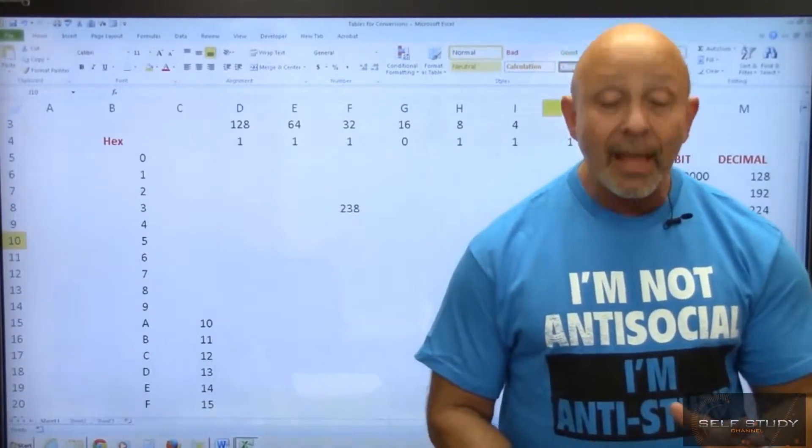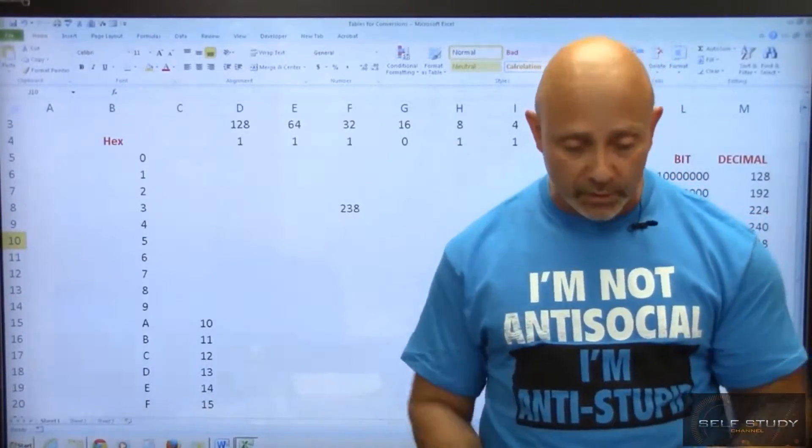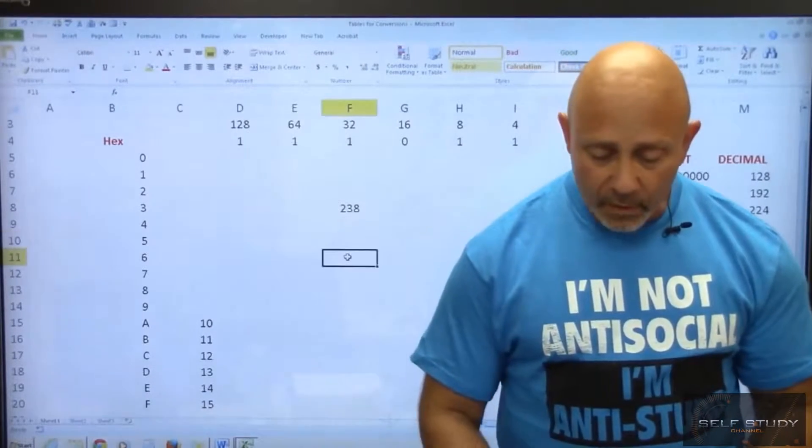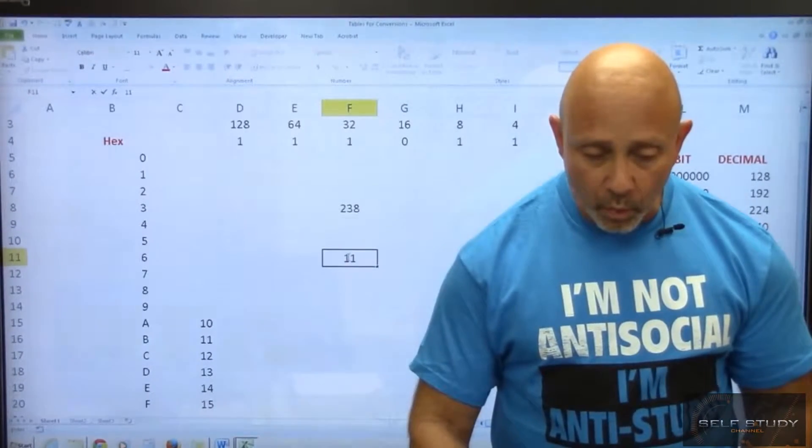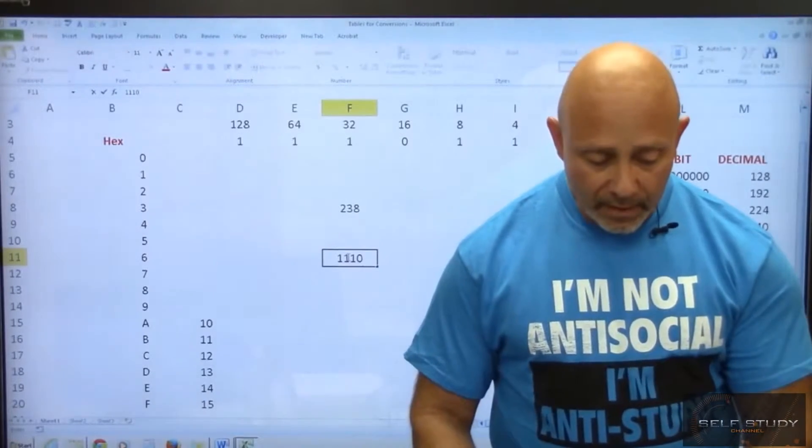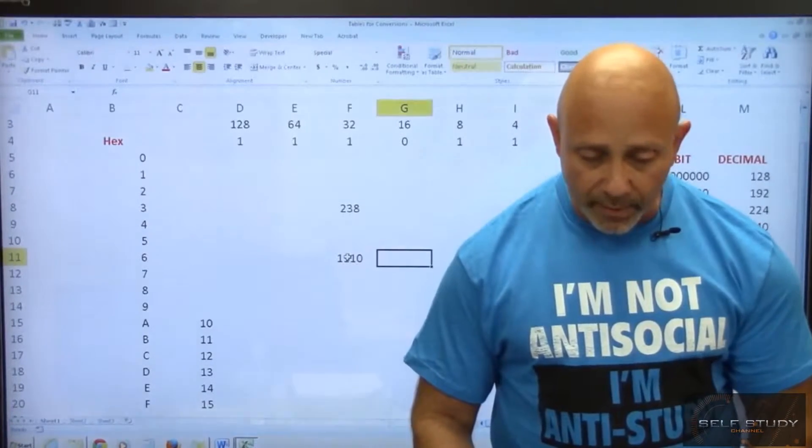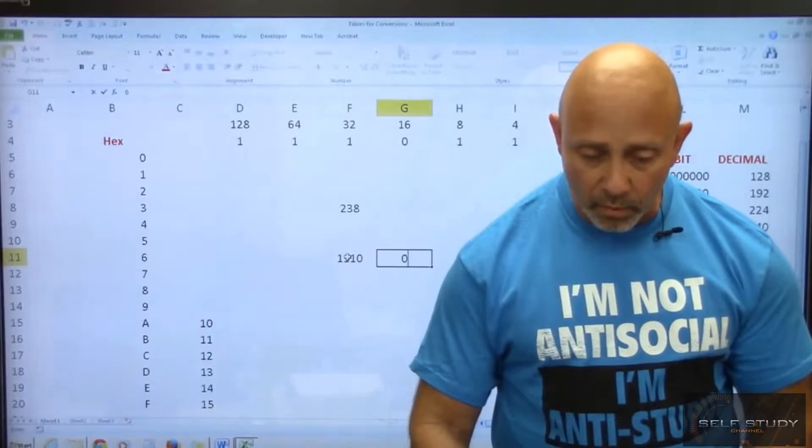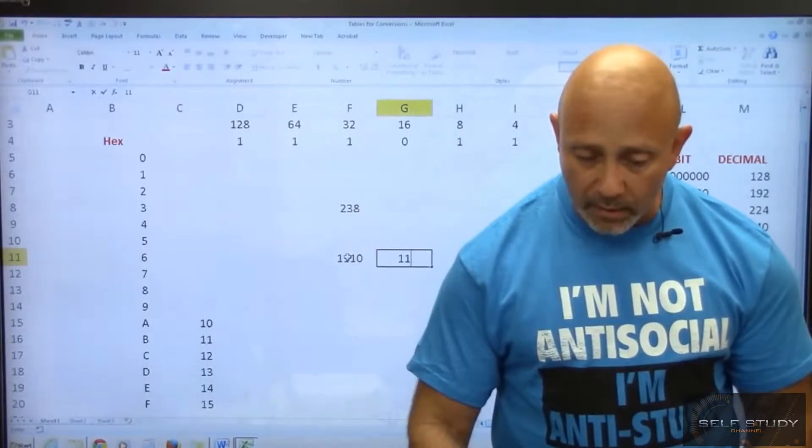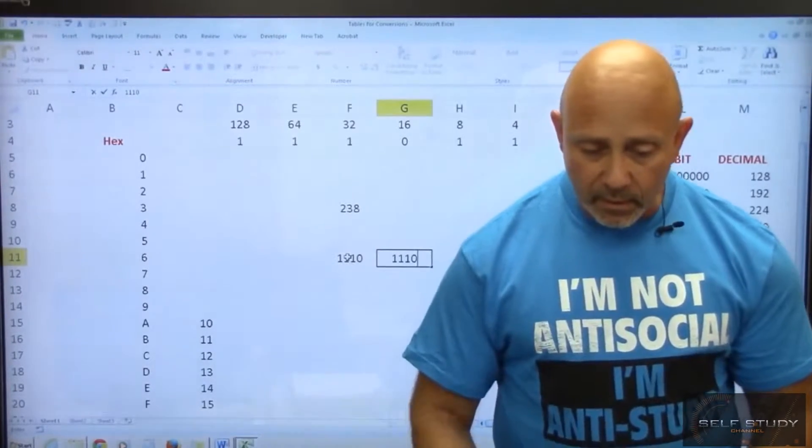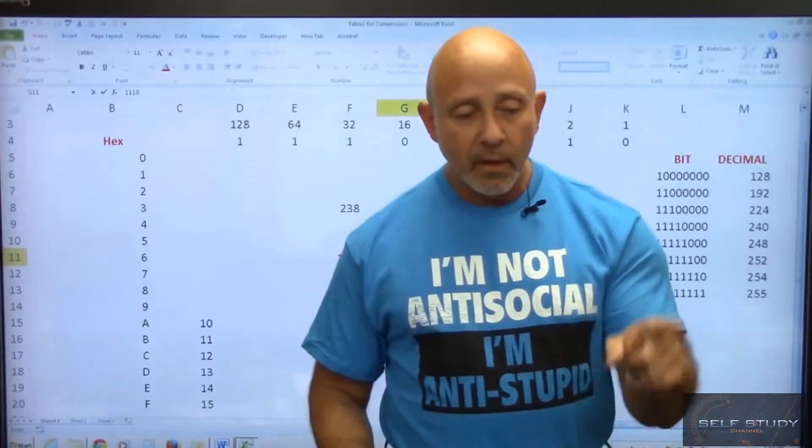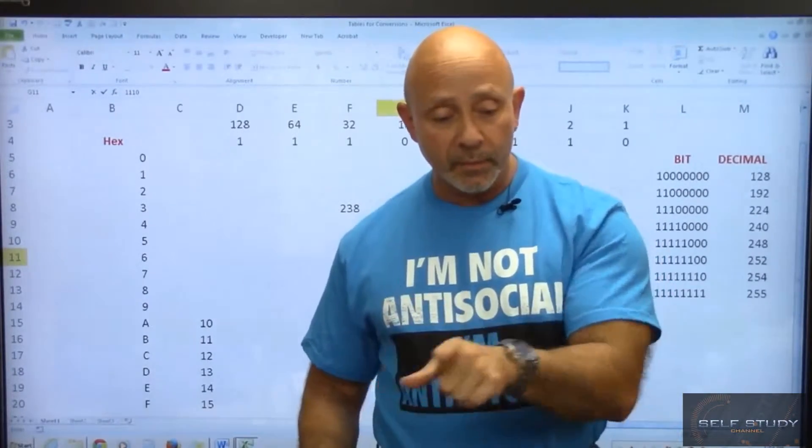So we take the binary and we break it up into two sections. So we got one, one, one, zero, and then we got one, one, one, zero. That's pretty cool, one, one, one, zero, one, one, one, zero.